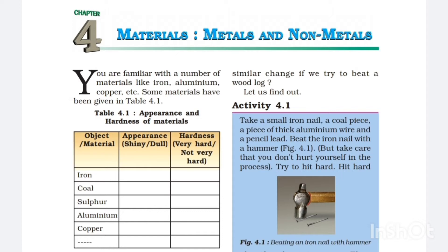You are familiar with a number of materials like iron, aluminum, copper, etc. Some materials have been given in Table 4.1: Appearance and Hardness of Materials. Object/Material: Iron, Coal, Sulphur, Aluminium, Copper. Then its appearance: Shiny or Dull; Hardness: Very hard, Not very hard.